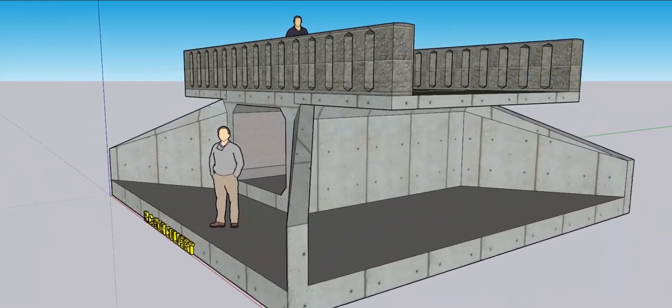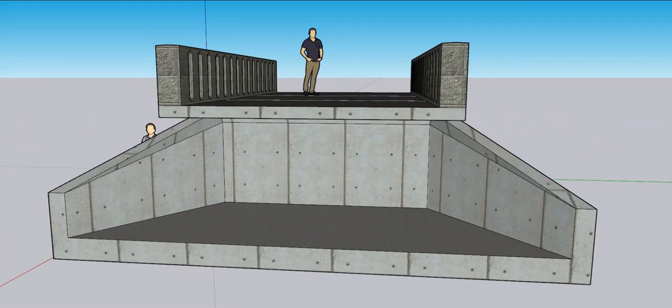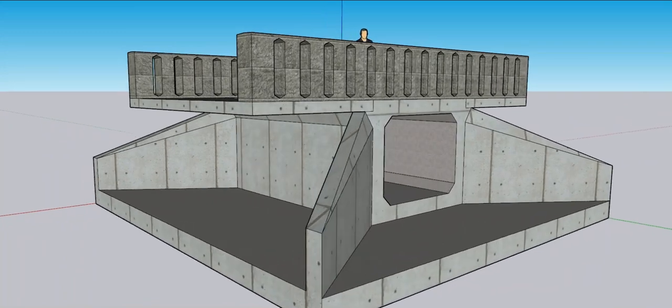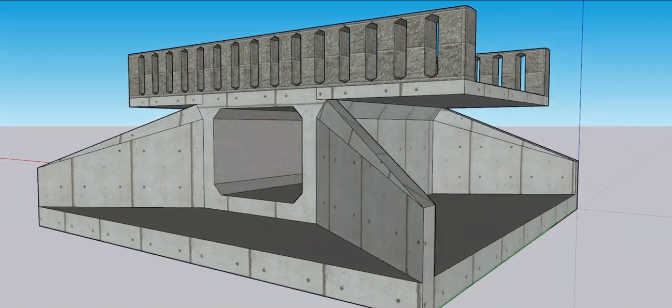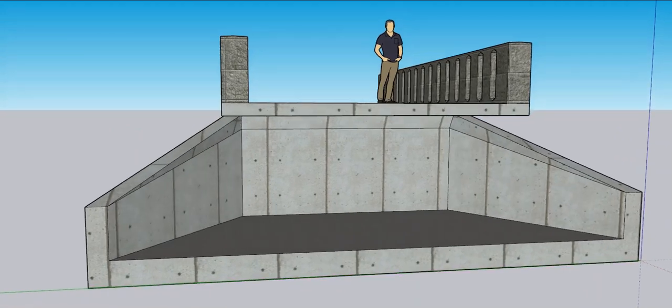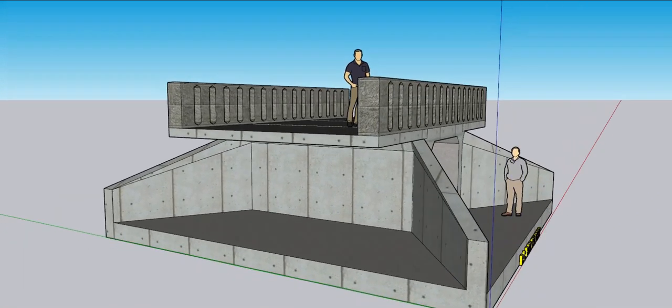Box culverts are appropriate for crossing a stream with restricted flow beneath a road or railway bridge with high embankments because they are built of two horizontal and two vertical slabs that are assembled monolithically.